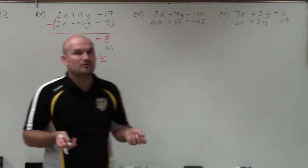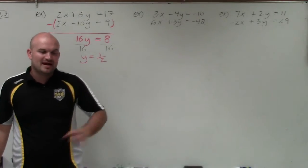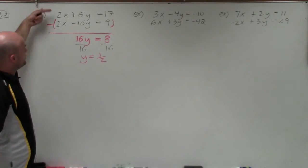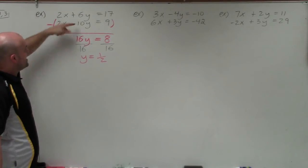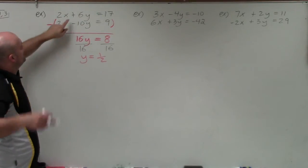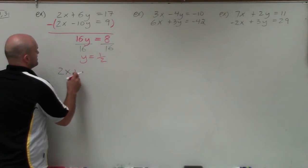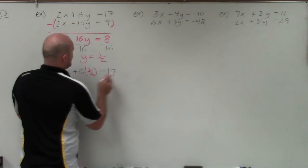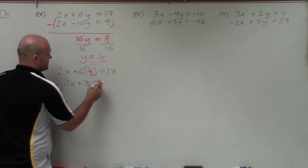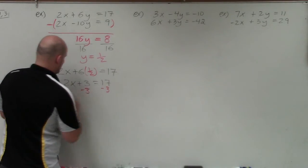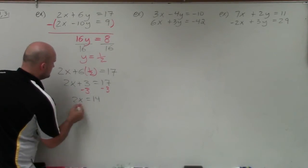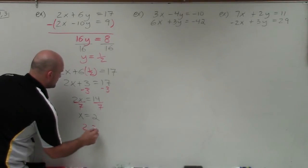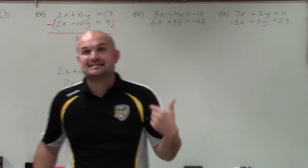Just like in substitution, now that I know the value of y, I can plug it into either one of my equations. I'm going to choose the top equation. So I have 2x plus 6 times 1/2, replacing y with 1/2, equals 17. Simplifying: 2x plus 3 equals 17. Using inverse operations, subtract 3, and I have 2x equals 14. Divide by 2, and I get x equals 7. So my solution set for this one is going to be x equals 7 and y equals 1/2, meaning these two graphs would intersect at that point.